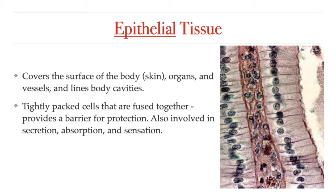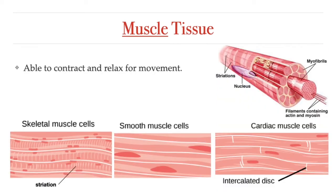Epithelial tissue also allows for secretion, like sweat or oils, and absorption — like the absorption of nutrients that happens in the small intestine, or the absorption of gases that happens at the lungs. Muscle tissue is responsible for movement both inside and outside the body. Muscle tissues have the ability to contract and get shorter, and then to relax and return to the original size, which is how they can produce movement within and of the body itself.